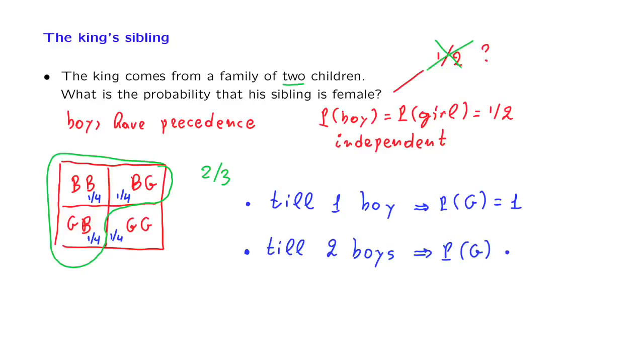the probability that the sibling is a girl is equal to 0. And you can think of other scenarios as well that might give you different answers.